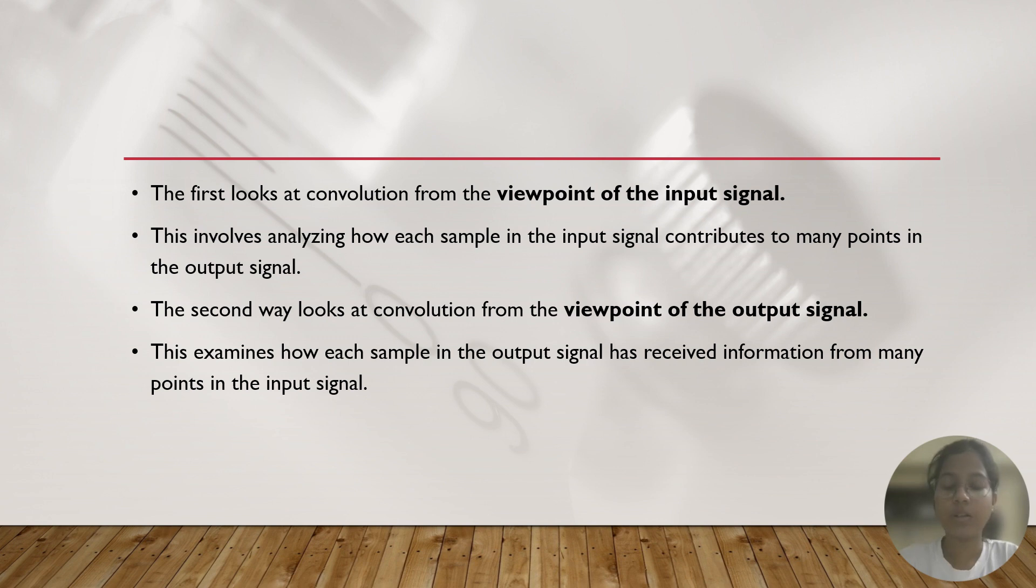So, from both, we have seen two different examples of applications of convolution in digital signal processing. The first example basically tells you the viewpoint of the input signal. That is analyzing how each sample in the input signal contributes to many points in the output signal. And the second example points out the viewpoint of the output signal. It examines how each sample in output signal has received information from many input signals.